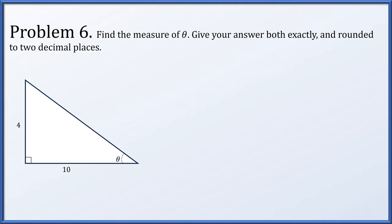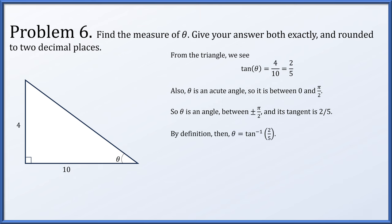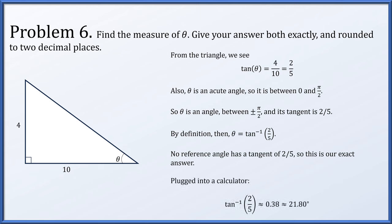Problem 6: find the measure of angle theta, giving the answer exactly but also rounded to two decimal places. Looking at the triangle, we have angle theta, the side opposite it of length four, the adjacent side of length ten, in a right triangle. So the tangent of theta is four tenths or two fifths. Theta is in a right triangle so it's between zero and pi over two, which is between plus or minus pi over two. Its tangent is two fifths, so by definition it is the arc tangent of two fifths — that's our exact solution. Plugging into a calculator: 0.38 radians or 21.80 degrees.